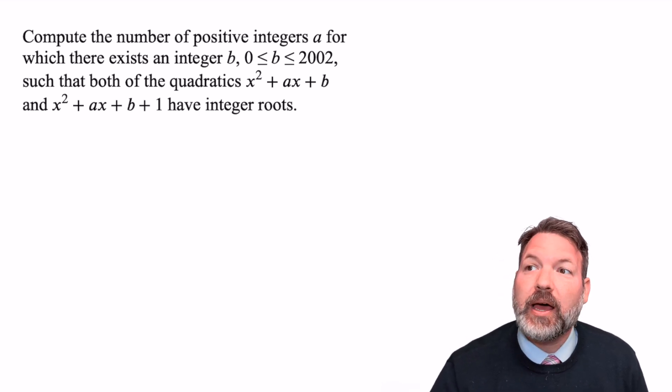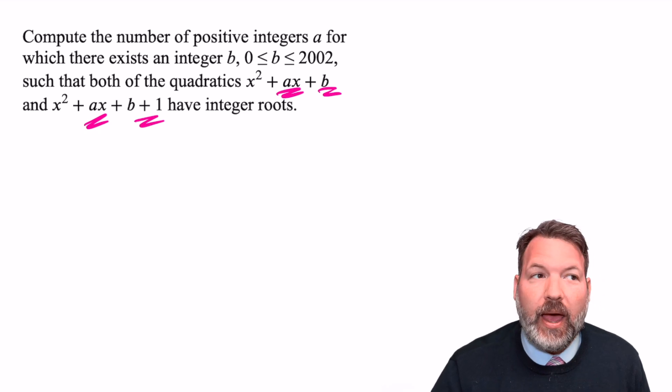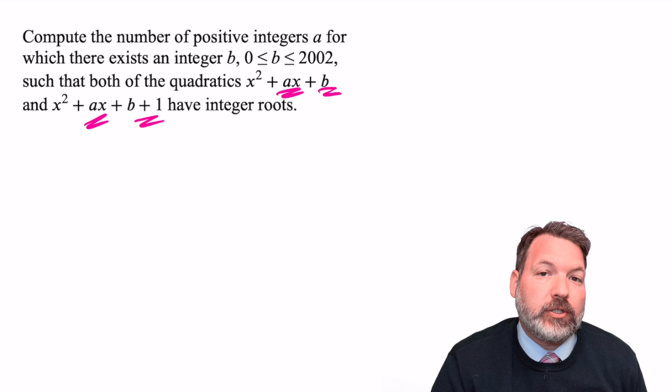But how do we know those are the only times where we can keep that linear term the same, and then vary our constant term by one, and get two different polynomials with integer roots? What if there's some other situations we didn't consider?